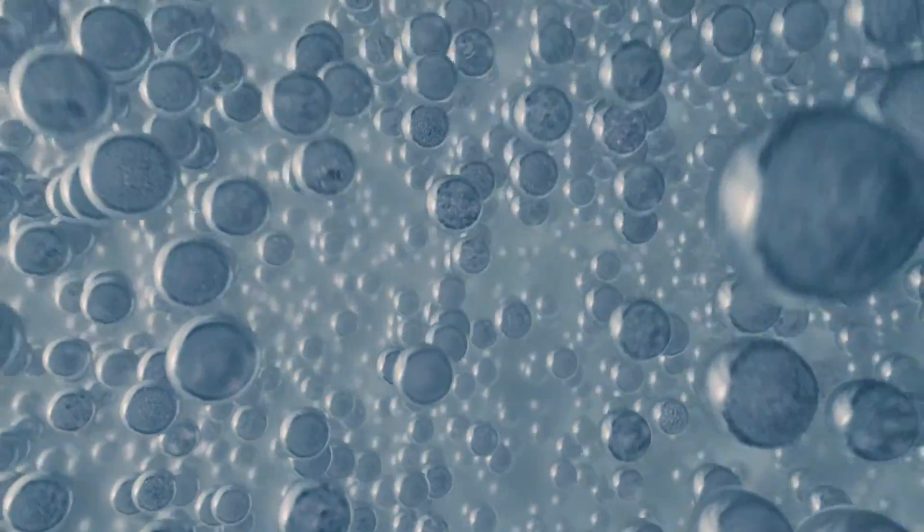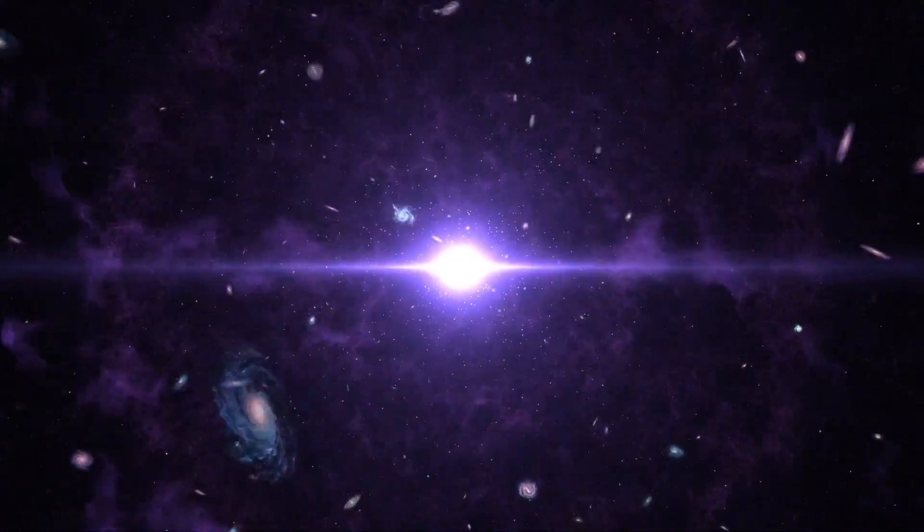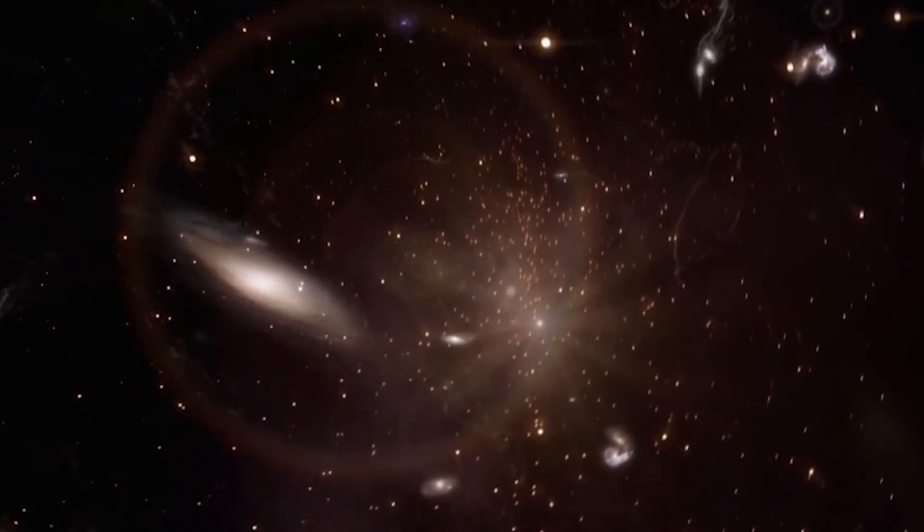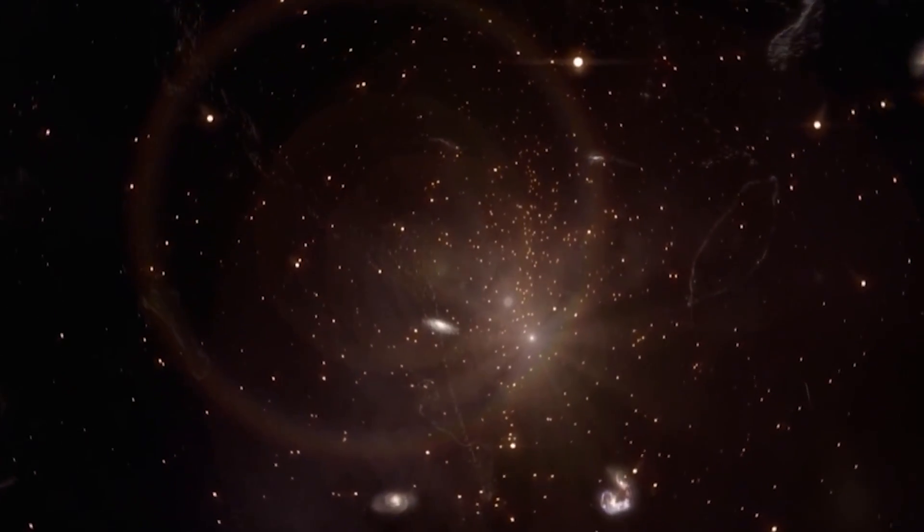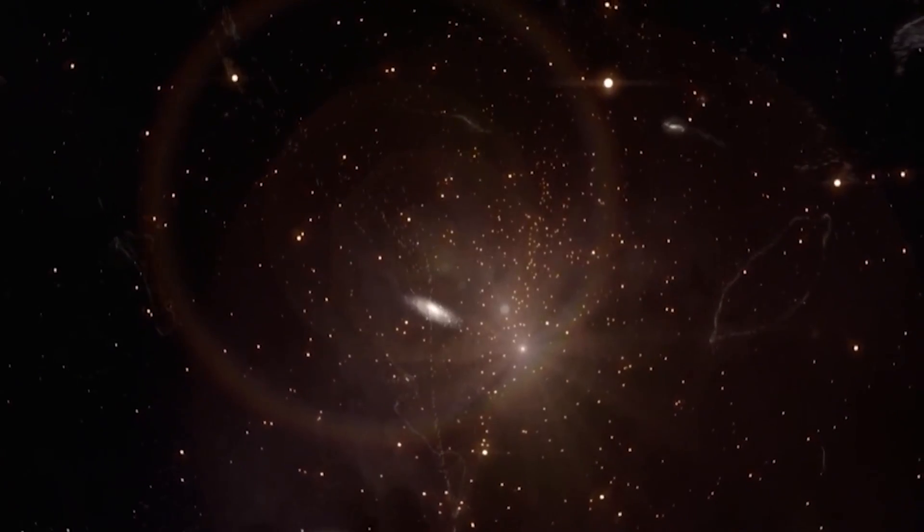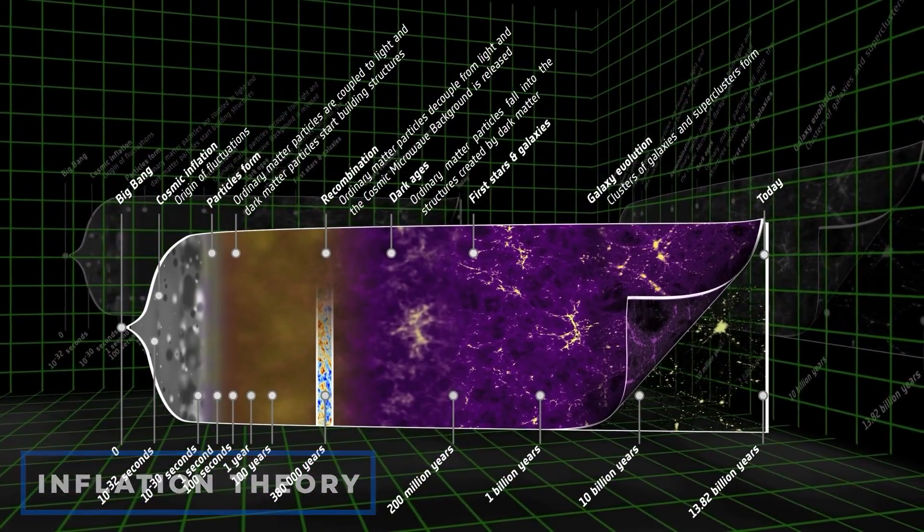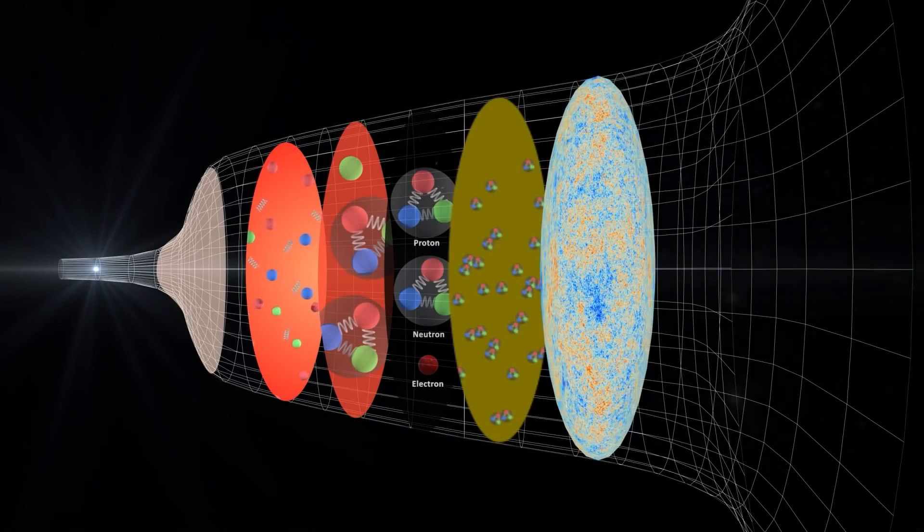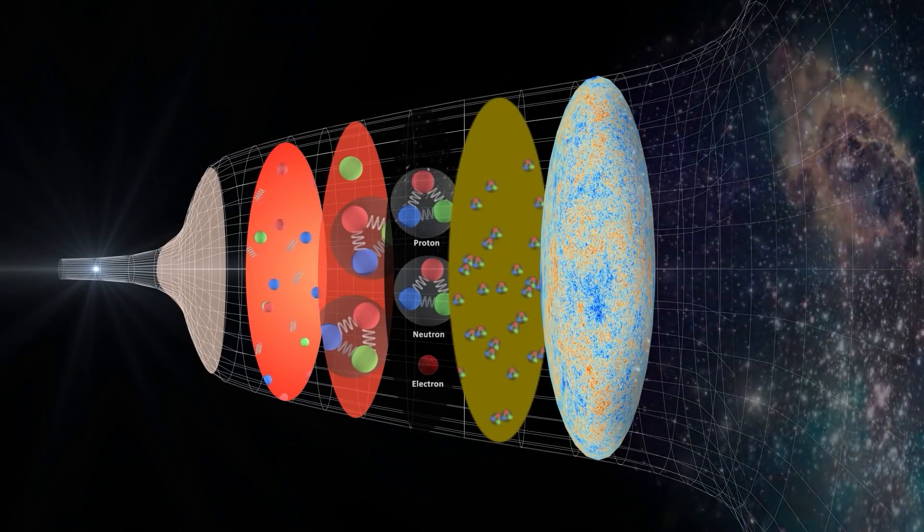Inflation solves many problems in standard Big Bang cosmology, a model that describes how the universe began, such as the fact that regions of the universe far apart have roughly the same temperature. According to inflation theory, before inflation ripped them apart, those regions were much cozier and got to know each other quite well.